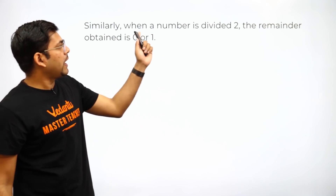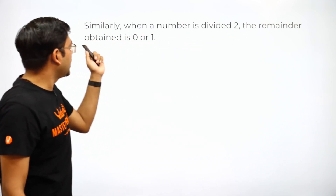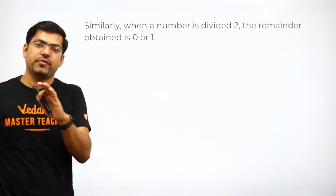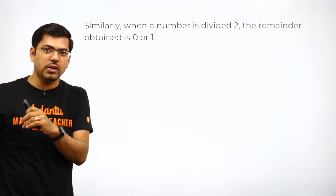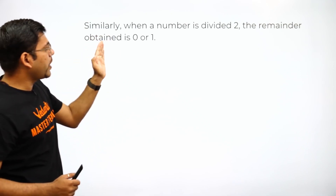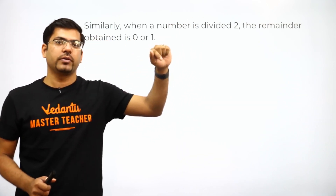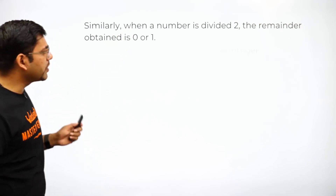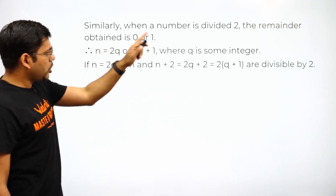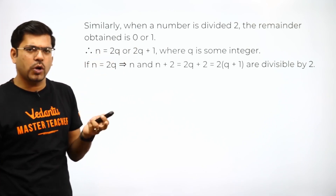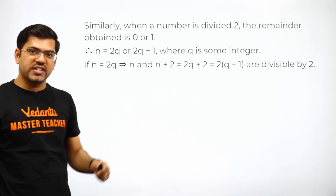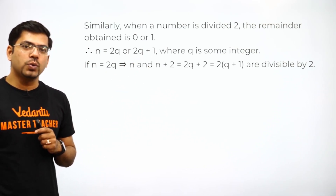Similarly, we will prove that when a number is divided by 2, the remainder obtained is 0 or 1. For a three-mark question you can stop here, but for four marks, move on. So n will be of the form 2q or 2q+1, because if we are dividing by 2, the remainder will be 0 or 1.